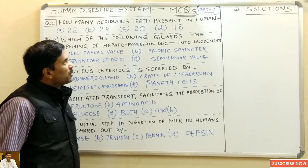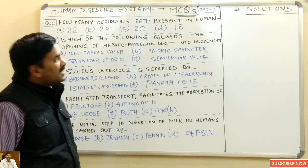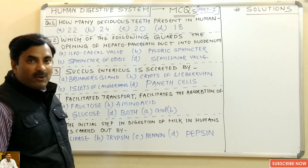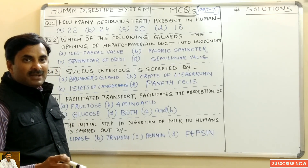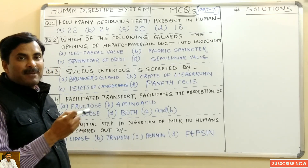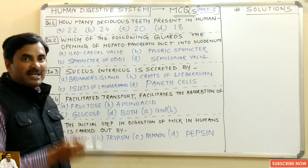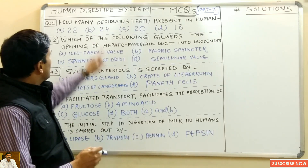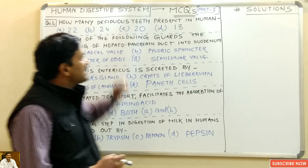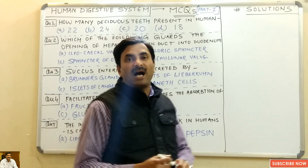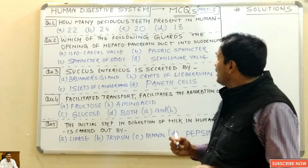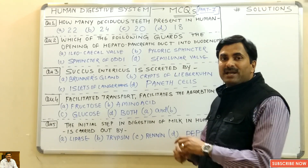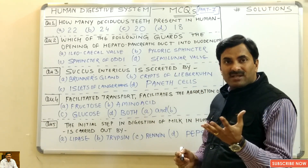Hello students, today we will be discussing some multiple choice questions based on the human digestive system. These questions are important because they have been asked in the medical entrance exams. The very first question is: how many deciduous teeth are present in human beings? The question arises — what are deciduous teeth?